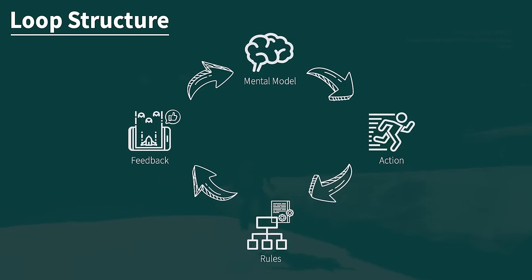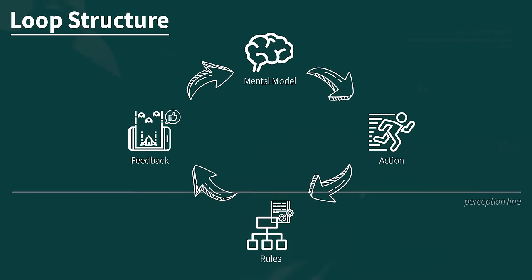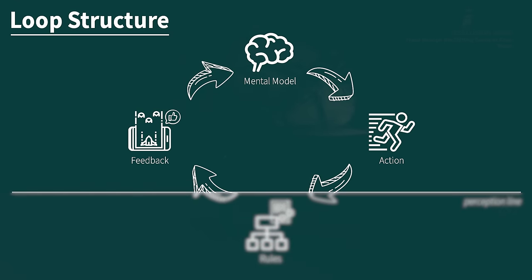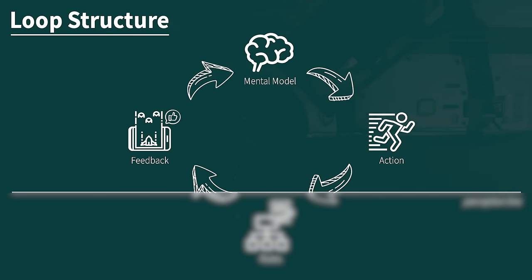As a last piece of the model, I'm going to add what I'll call the perception line. Everything above the perception line is available information to the player; everything below is hidden. From the player's perspective, they don't understand what the system is doing — they just take actions and wait for feedback to see if their actions did anything.